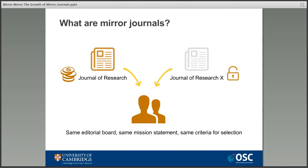If you imagine that the Journal of Research is an established journal in its field, popular with researchers who are looking to publish, it currently operates under a hybrid model by charging a subscription and APCs to make articles openly available at the time of publication. They want to encourage the move towards open access and avoid accusations of double dipping, so they set up the Journal of Research X, which publishes only open access — born open access — content. It has the same editorial board, the same mission statement, the same peer review process and the same criteria for selection. At this point the original Journal of Research reverts back to being a subscription-only journal.